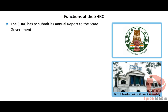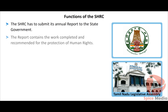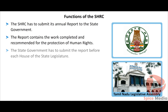The SHRC has to submit its annual report to the state government. The report contains the work completed and recommended for the protection of human rights. The state government has to submit the report before each house of the state legislature for taking the next step.